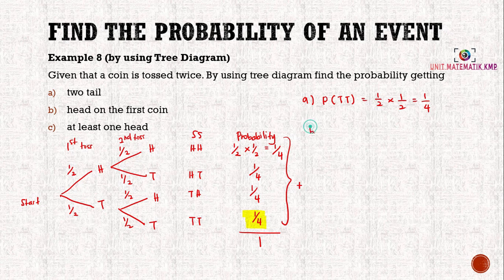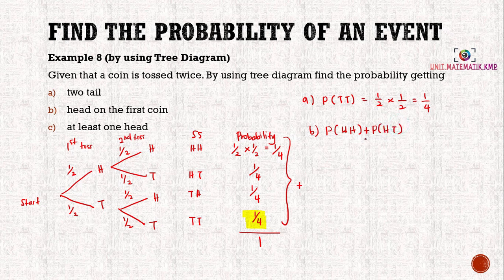For part b, the question asks for the probability of getting a head on the first coin. On the first coin we get a head, so we can have either HH or HT. The probability is one over four plus one over four, which equals two over four, equal to one over two. Always simplify your answer.